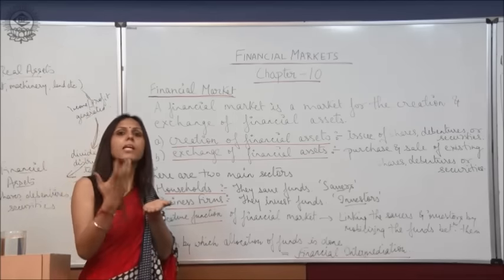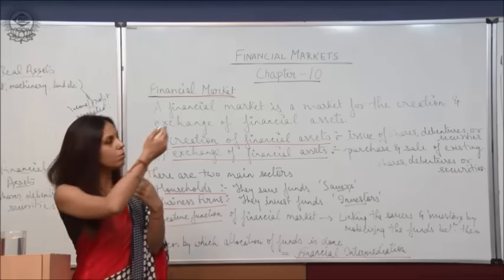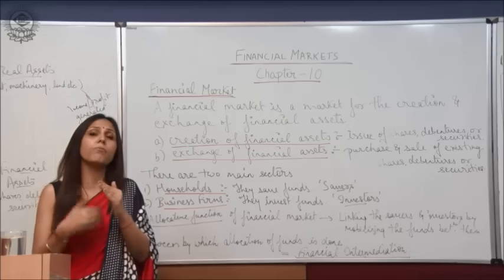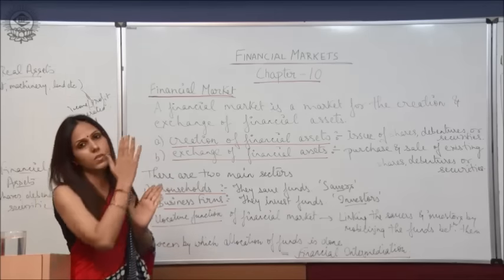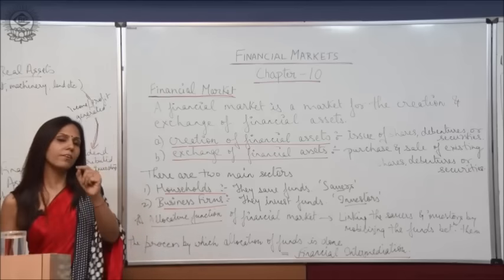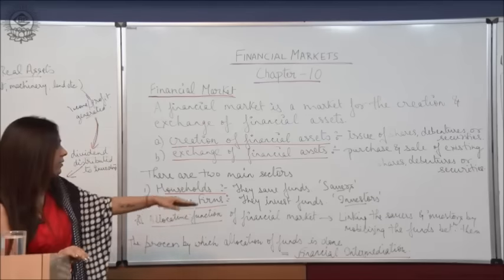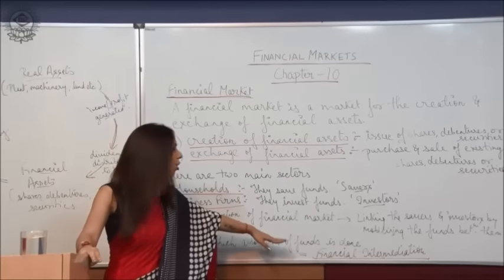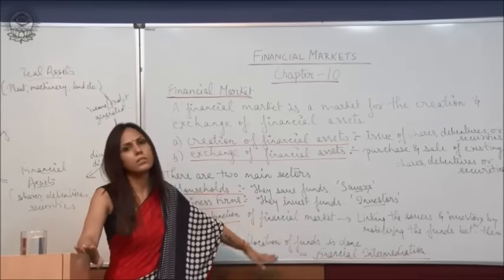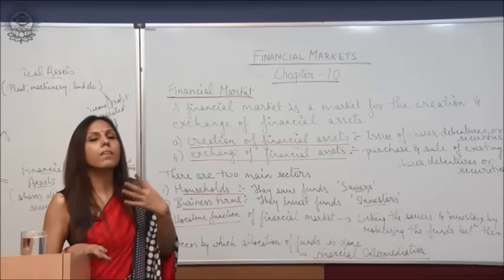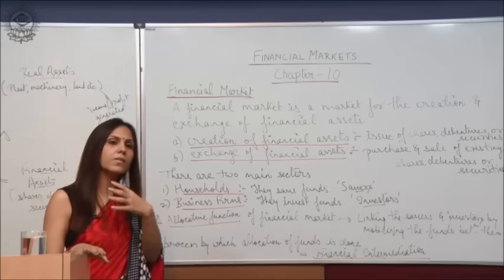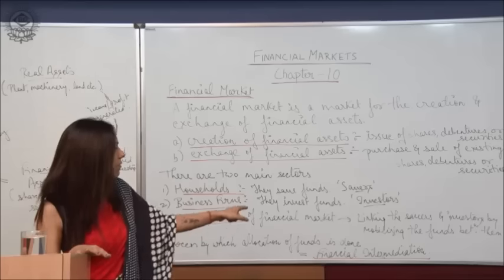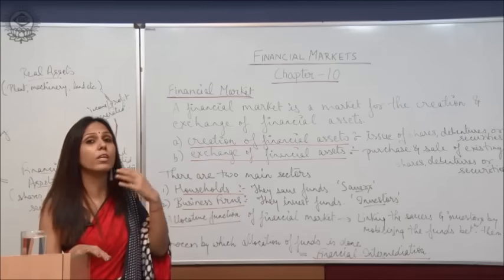The savers save money in banks, and the borrowers borrow money and become investors — they invest money to provide profit to these savers. Financial intermediation is the process by which allocation of funds is done. How investors allocate the money of savers into different funds — that process is called financial intermediation.